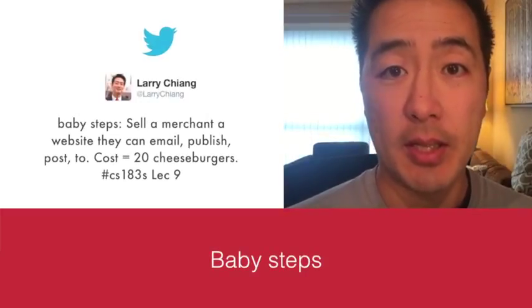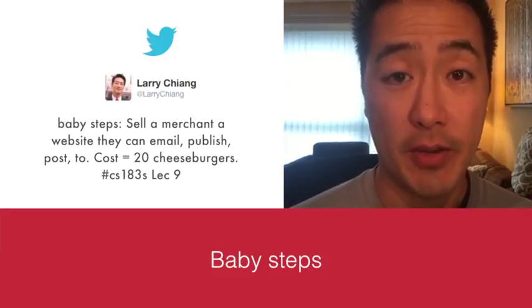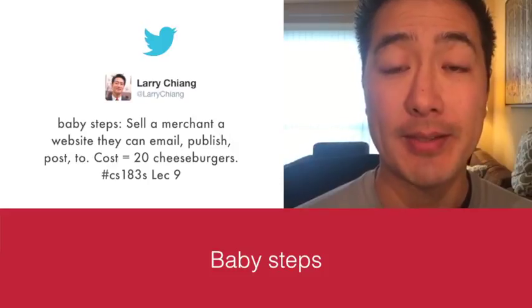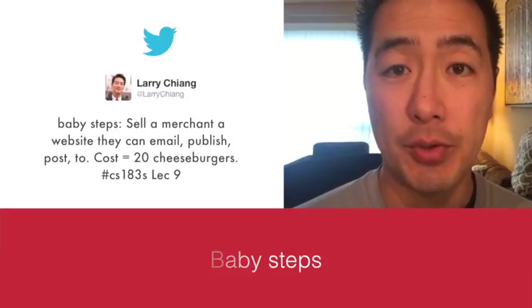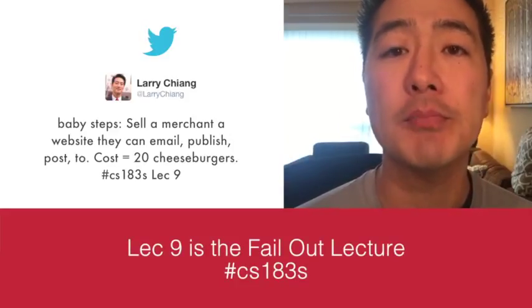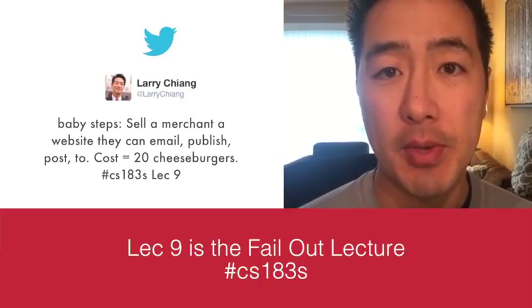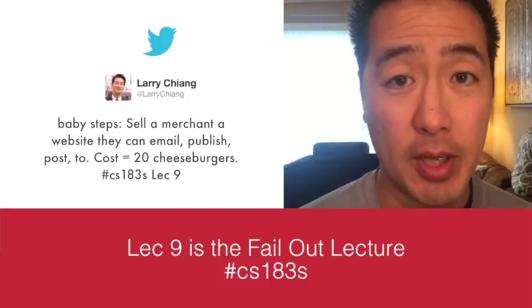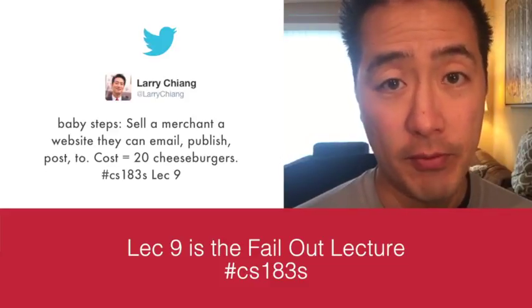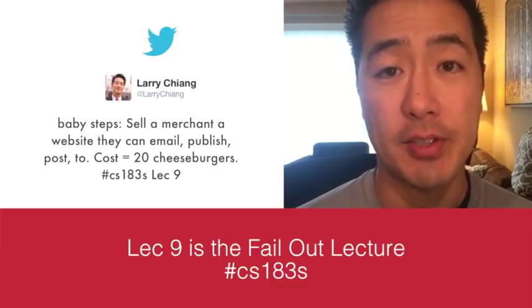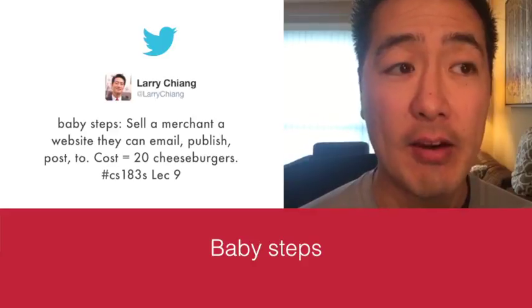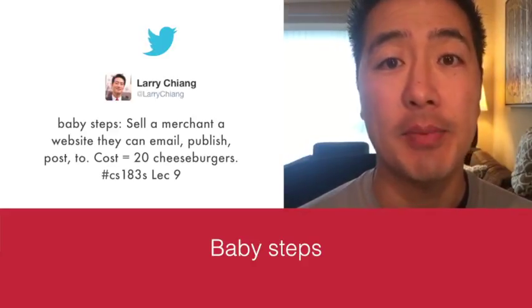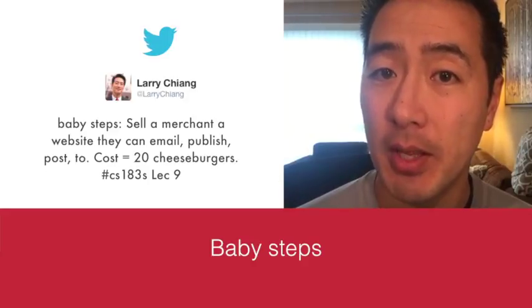The first possible sale is selling a website. A lot of merchants, even in Palo Alto, over 50% of restaurants don't have a website. Sell them a website — don't do it for one cheeseburger, do it for 20 cheeseburgers or some small barter amount. You can help the merchant email-publish posts, because a lot of merchants don't realize they can use their iPhone to email-publish posts to WordPress and therefore build a website and keep it updated with new menu items.